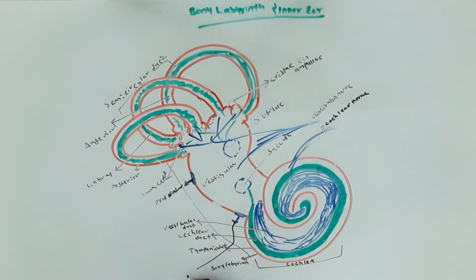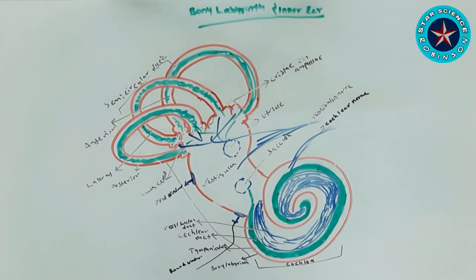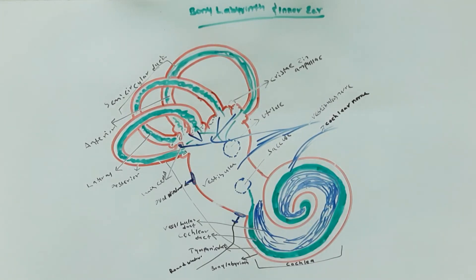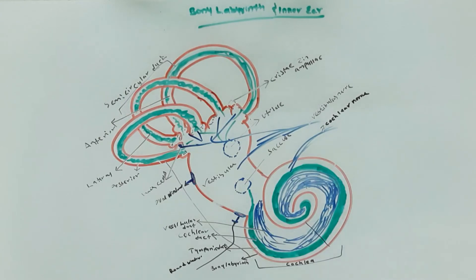This is the oval window and now we are seeing the round window. Vibration of sound from the middle ear enters through the oval window into the cochlea. The round window takes all the pressure released from the cochlea.